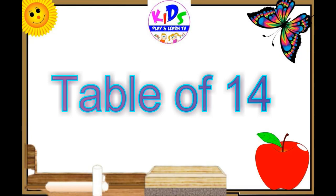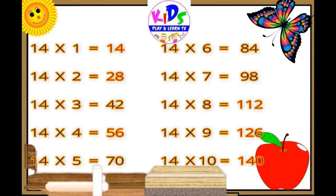Hey kids, let's repeat. 14 ones are 14, 14 twos are 28, 14 threes are 42, 14 fours are 56, 14 fives are 70, 14 sixes are 84, 14 sevens are 98, 14 eights are 112, 14 nines are 126, 14 tens are 140.